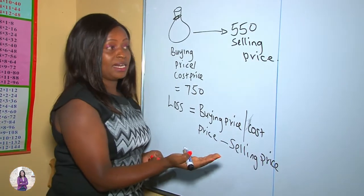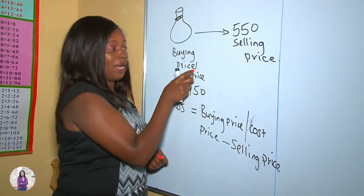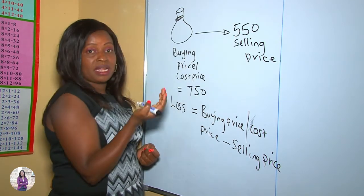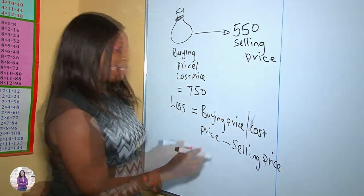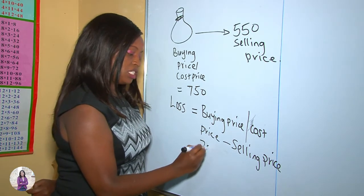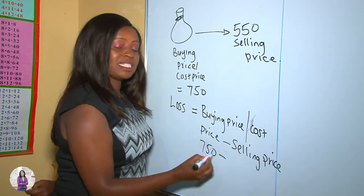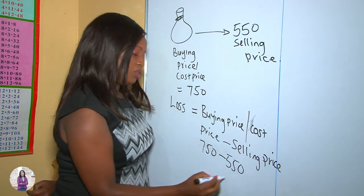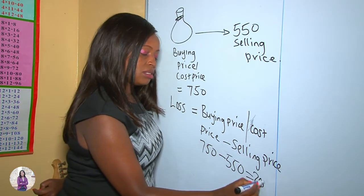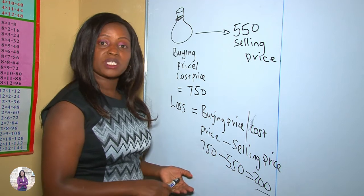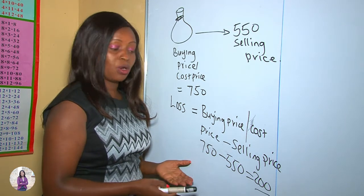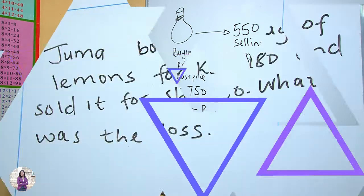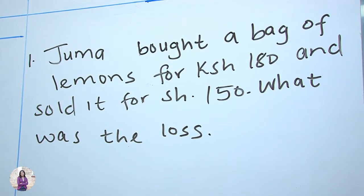As you can see, the selling price is less than the buying price, so you can't subtract a big number from a small number — you will get a negative. Therefore it is going to be 750, which is our cost price, take away our selling price of 550. When you take away you get 200. Therefore this person made a loss of 200 shillings.